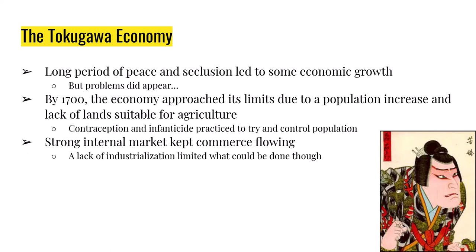The Tokugawa period is a long era of peace and seclusion. By 1700, the economy approaches its limits because of population increases, forcing the people of Japan to use either contraception or infanticide — the purposeful killing of infants — to control population growth. There was a strong internal market with commerce flowing throughout Japan, but very little industrialization, which greatly limited the Japanese economy. Eventually the system starts to break down and the Japanese economy slows to a halt, with little change between 1700 and the 1850s.